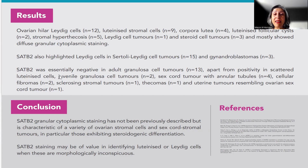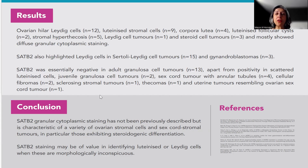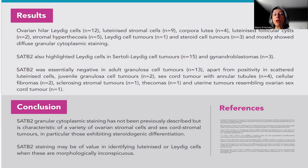SATB2 is essentially negative in adult granulosa cell tumor, apart from if we encounter some luteinized cells in juvenile granulosa cell tumors and other tumor types. The utility of cytoplasmic granular staining within the context of ovarian tumors, especially sex cord stromal tumors, might really be of potential help to support your diagnosis.